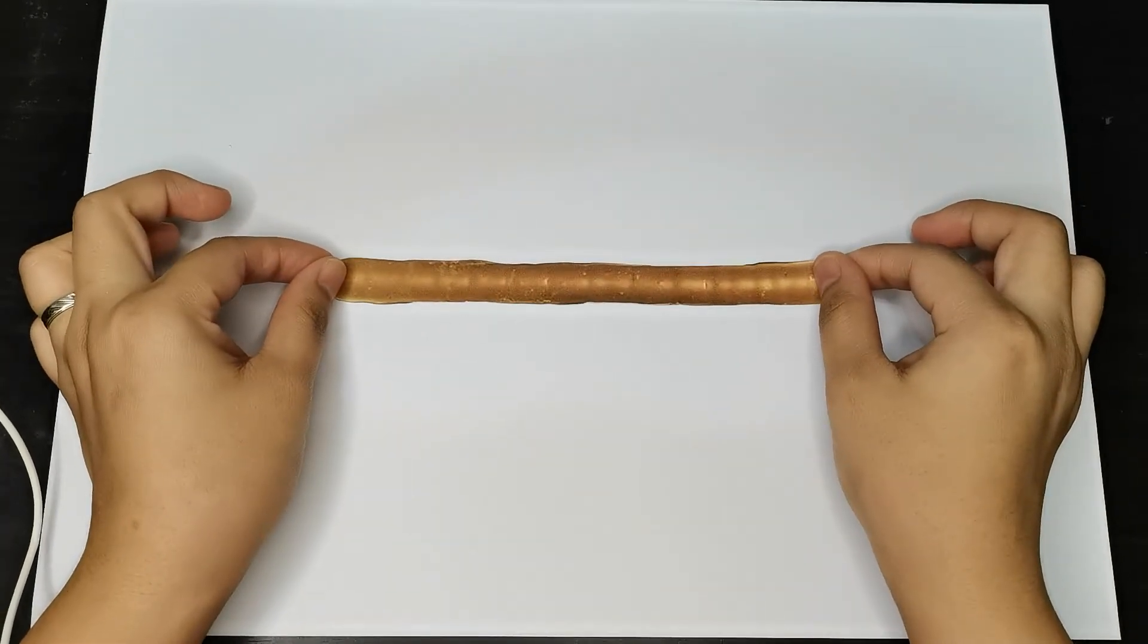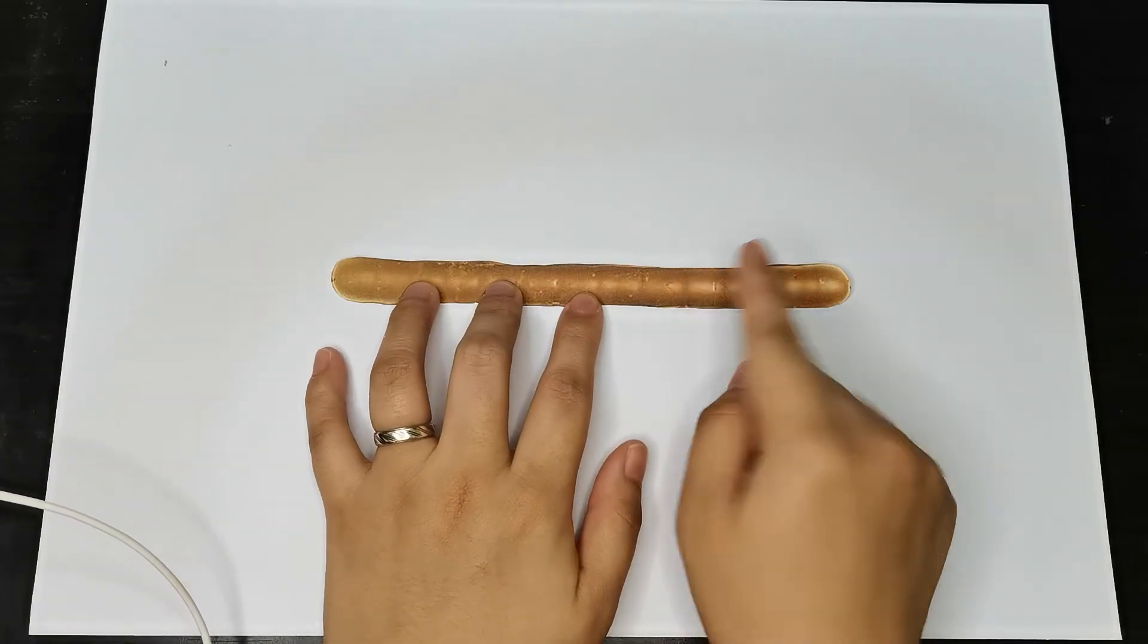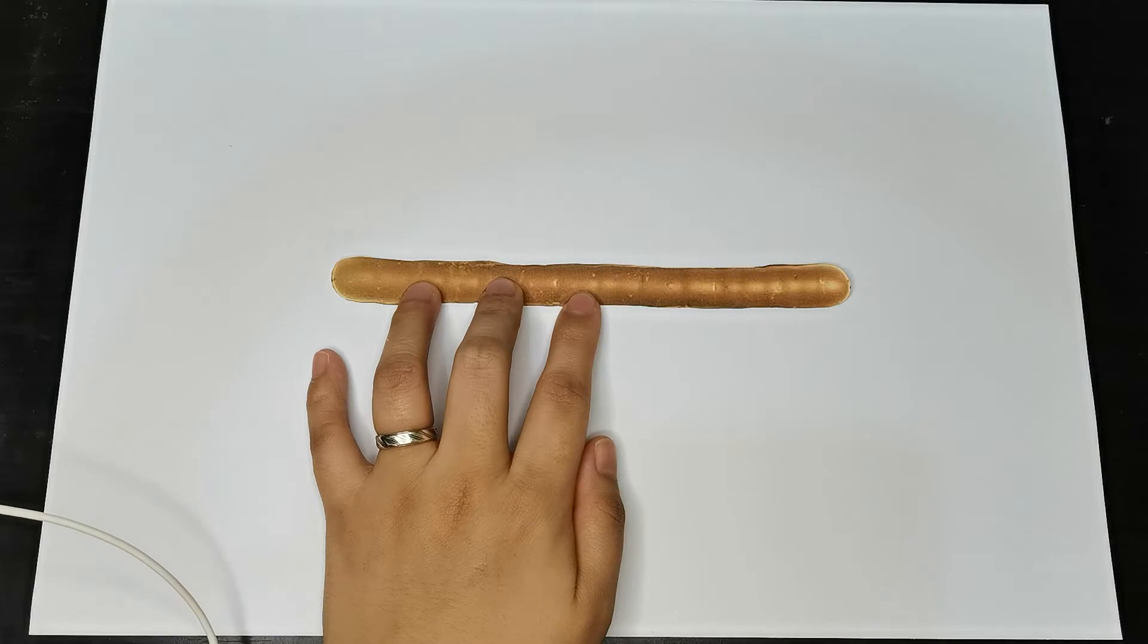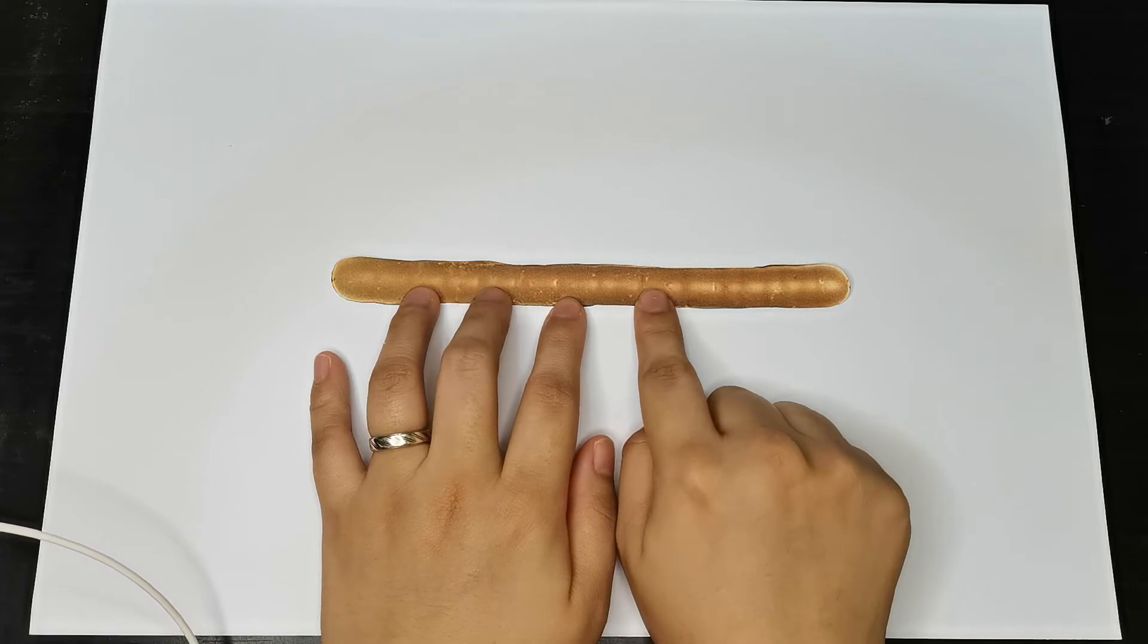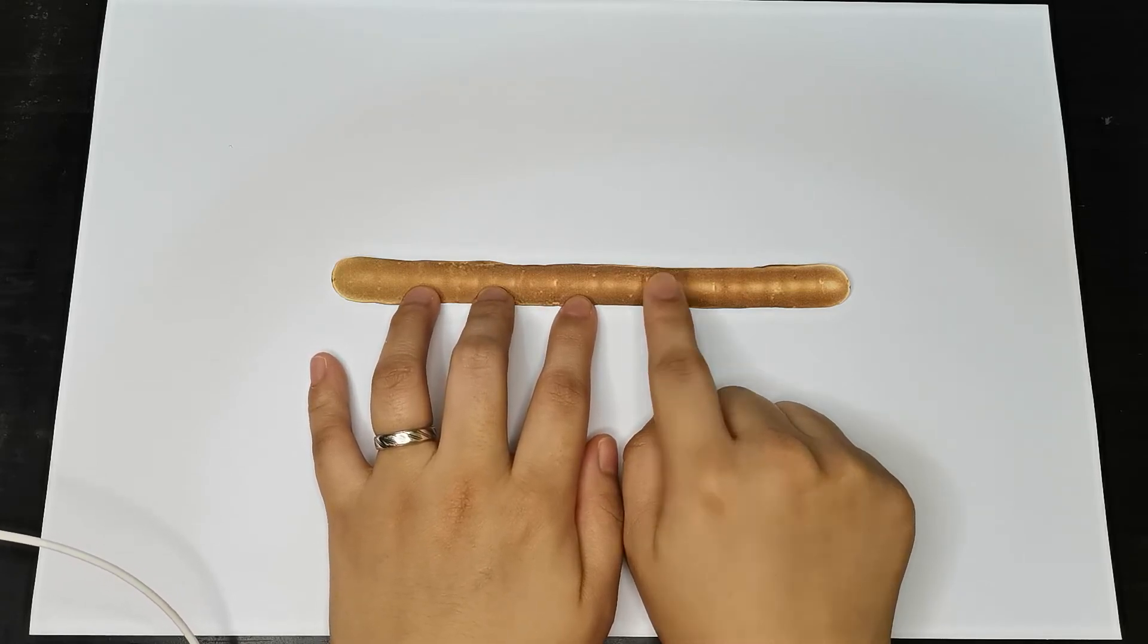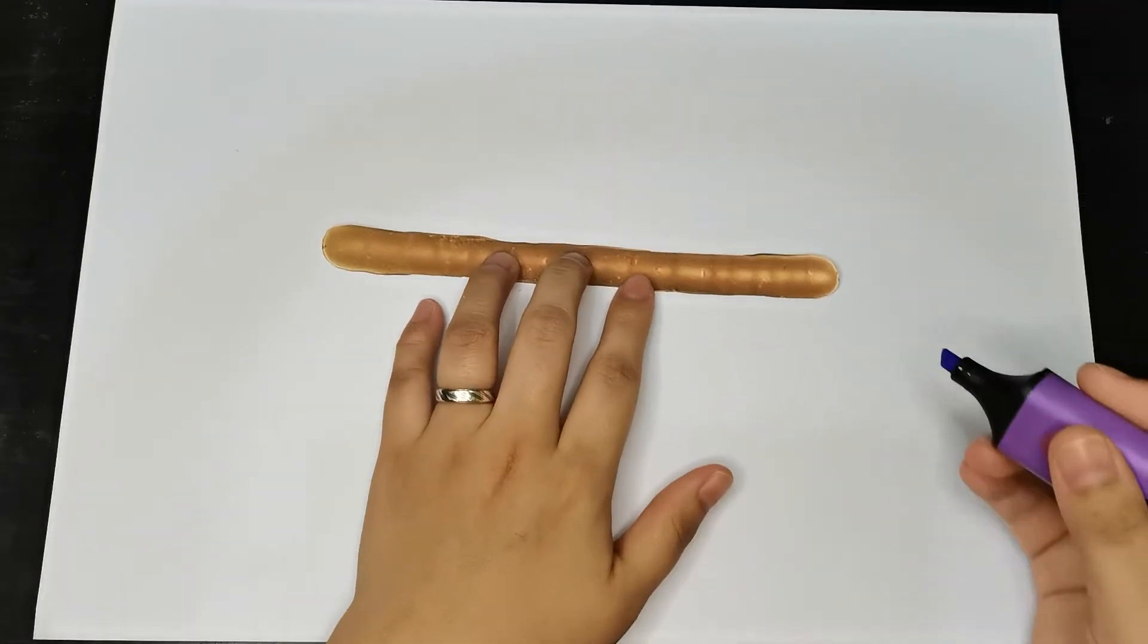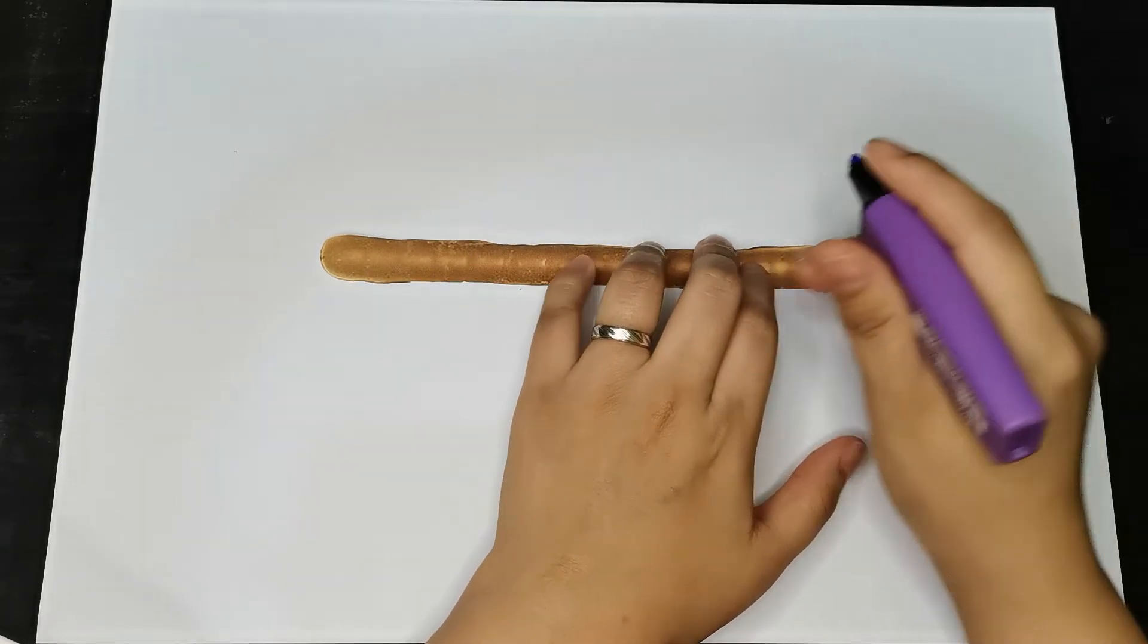Here are the steps in constructing a segment bisector. Imagine that you have a pretzel breadstick here and you have a sibling. Of course, you can't divide the breadstick unevenly. You need to divide it equally for your sibling. We have to bisect this pretzel stick into two equal parts.